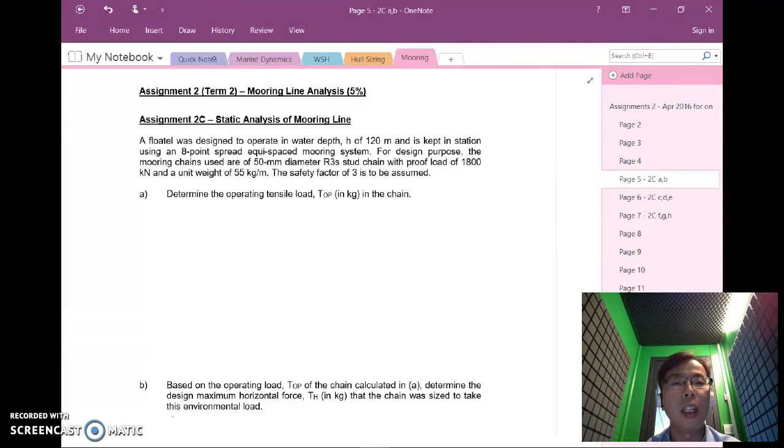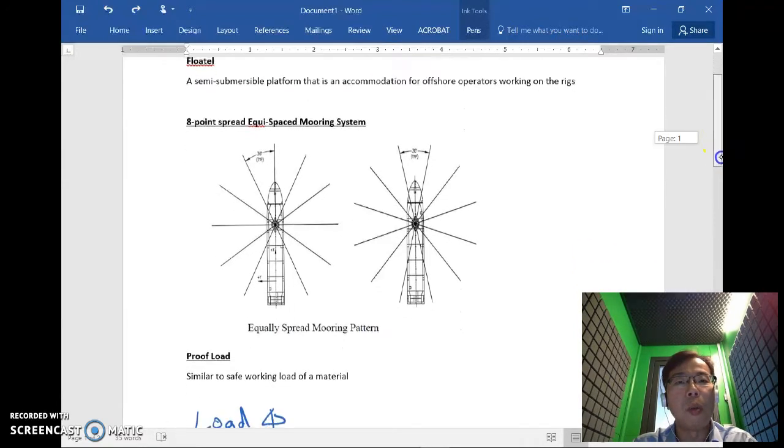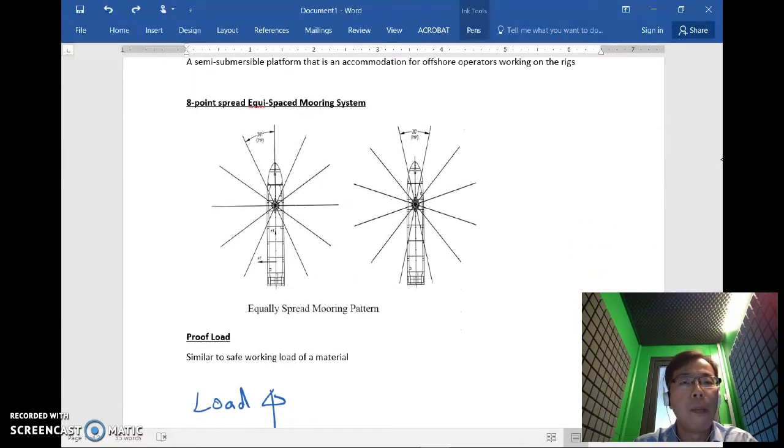Determine the operating tensile load of the chain for this instance. Before that let me explain what is a flotel and some of the terminologies. A flotel essentially is a semi-submersible platform that is an accommodation for offshore operators working on the rigs. An 8-point spread equispaced mooring system refers to how the platform is in position. Essentially there are 8 lines that is holding the platform.